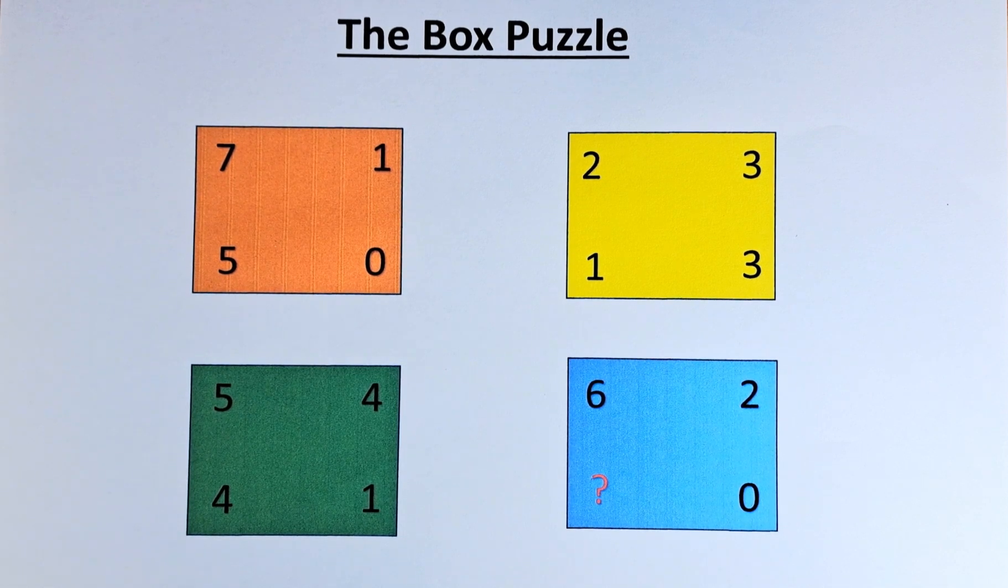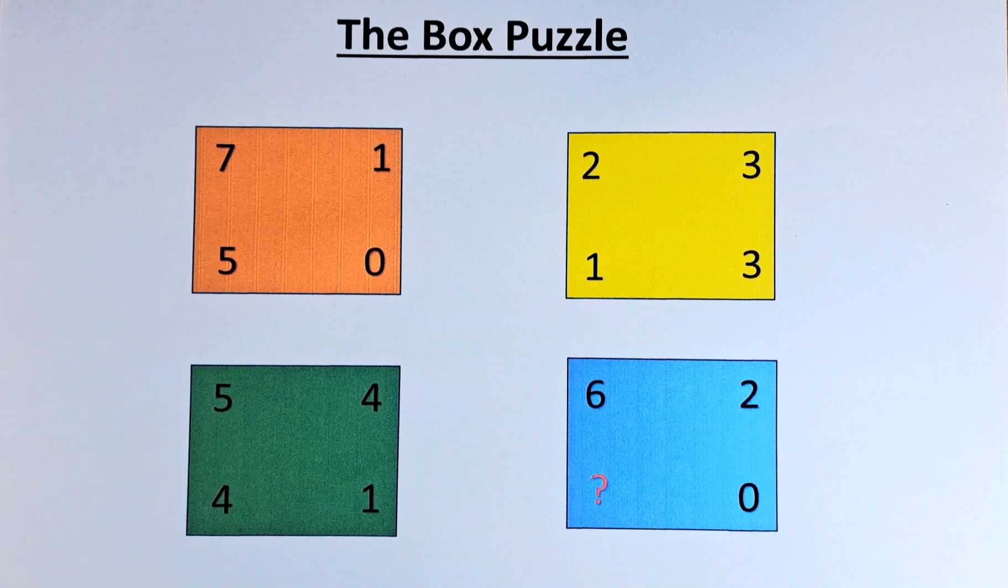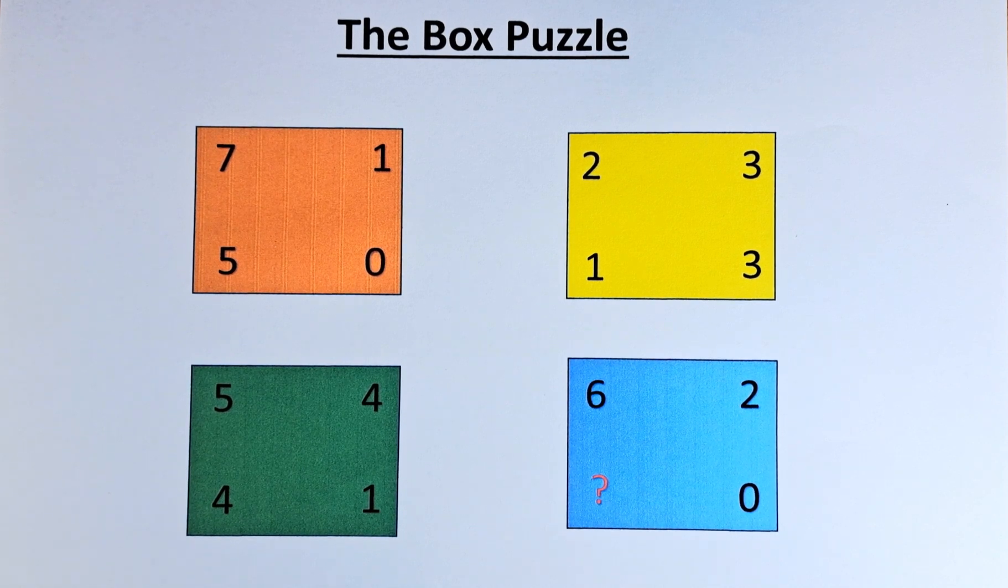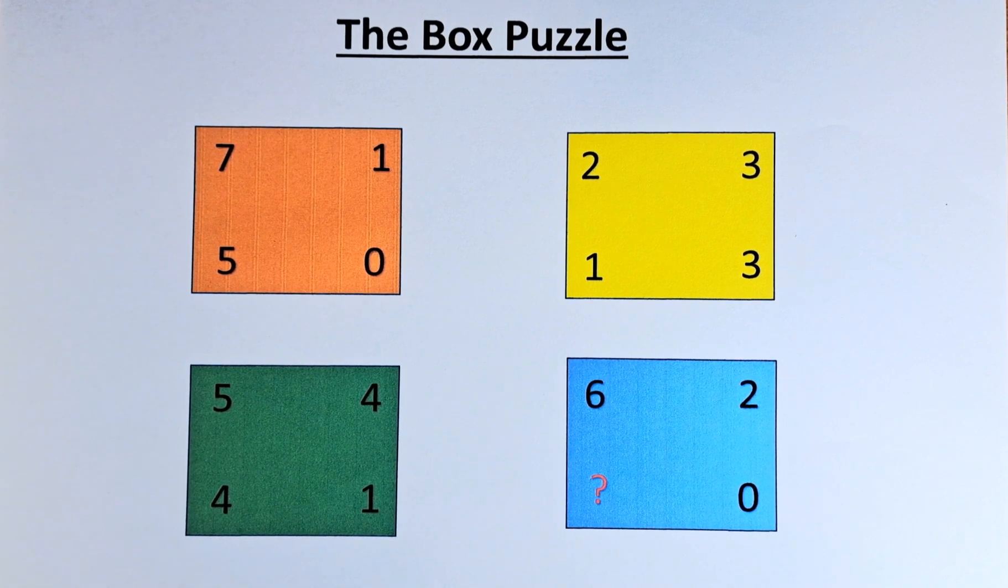The numbers in the boxes are as follows. In the orange box, we have 7150. Yellow box, 2313. Green box, 5441. And in the blue box, we have 62?0.